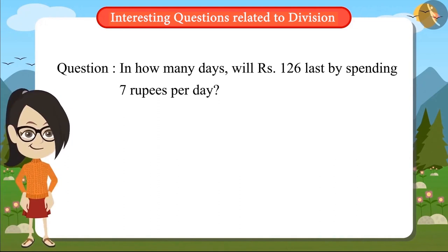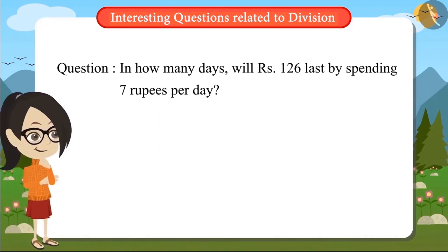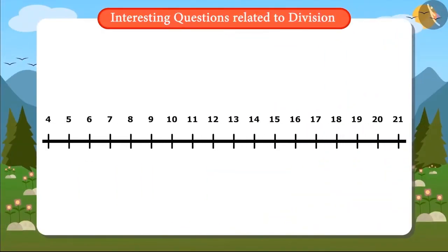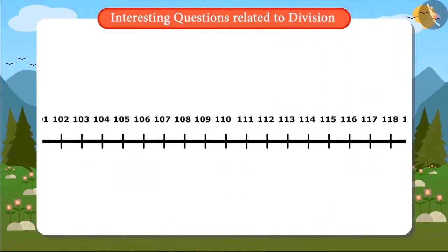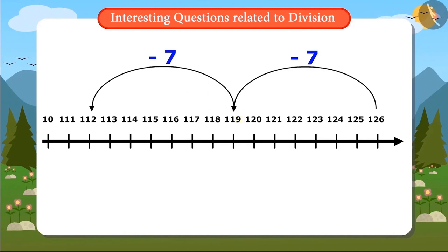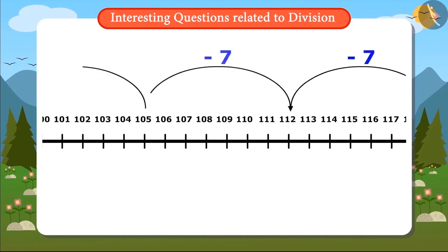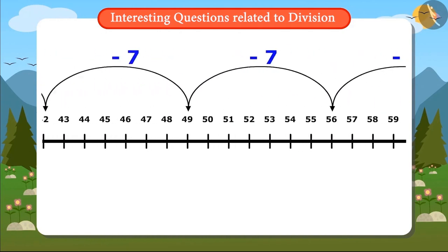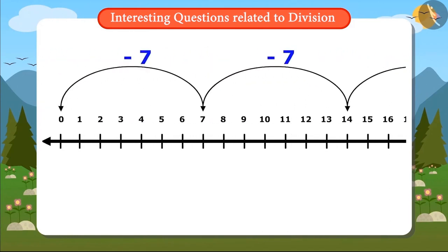Can you help Vandana find this out? Let's see how Vandana solved this problem. To solve this question, I have come up with a technique. I will write 126 on a number line. If I subtract 7 from 126, I get to know that after one day I will be left with 119 rupees. Now I will subtract 7 from 119 — the answer is 112. By this I get to know that after two days, I will be left with only 112 rupees. Likewise, I will keep subtracting 7 on this number line till I reach zero.